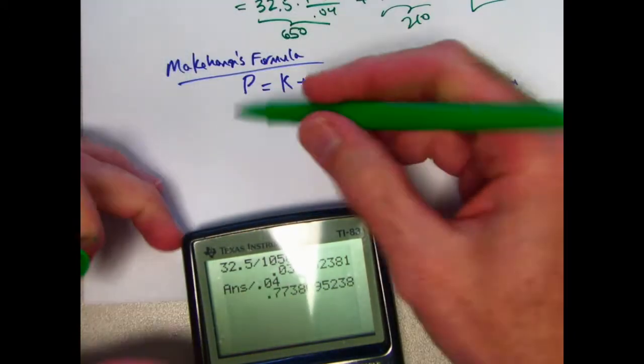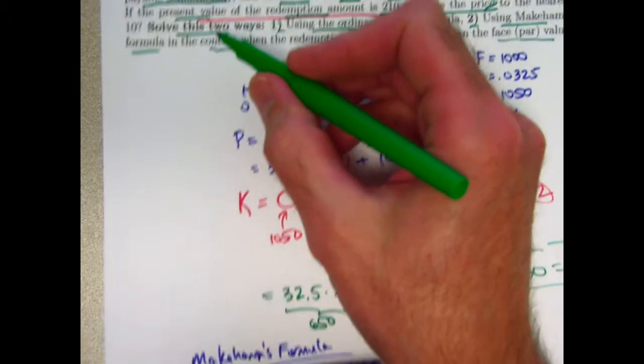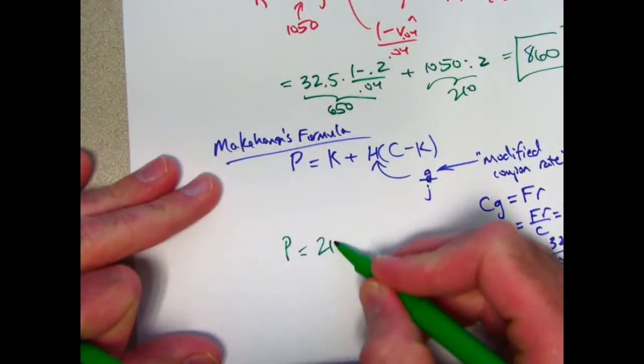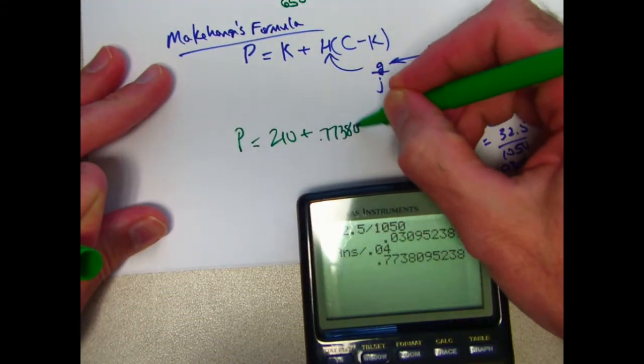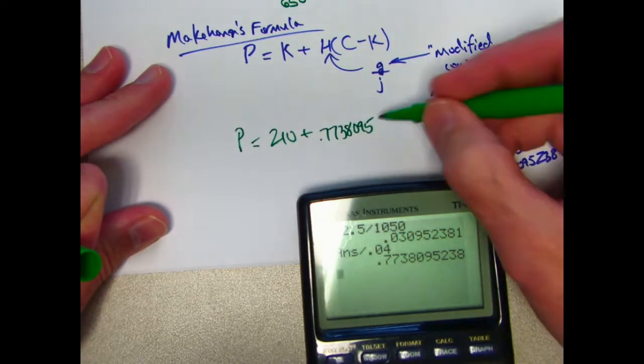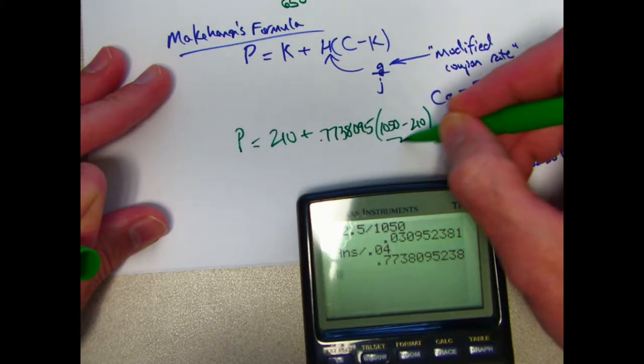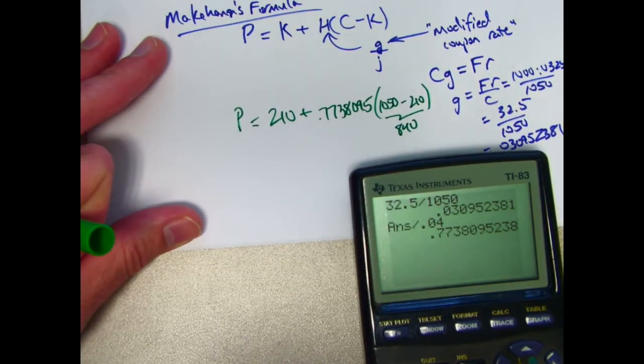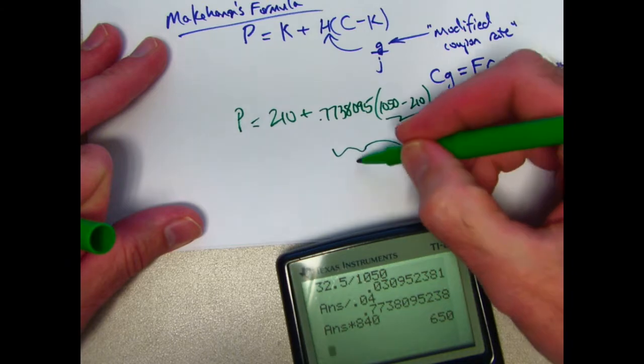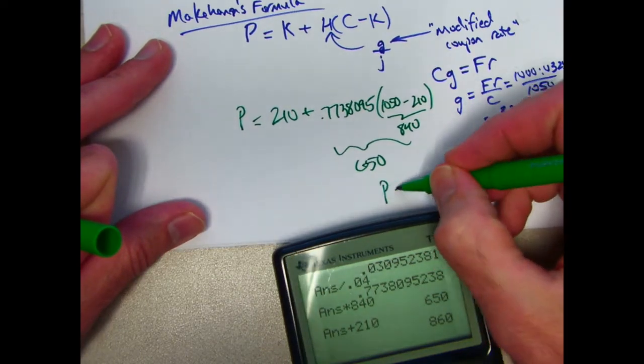Let's go ahead and plug in what we know now. The price, remember K in this problem was the present value of the redemption amount. That's 210. So we get 210 plus 0.7738095 times C minus K, 1,050 minus 210. That is 840. So at this point, 0.77381 needs to get multiplied by 840 to get 650. This is 650. Plus 210 gives us the same final answer, 860. P is 860.